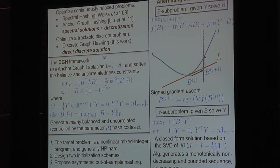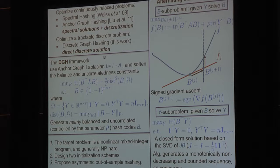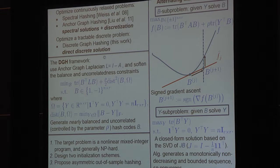Our objective function for the discrete graph hashing framework minimizes the graph Laplacian term, plus we penalize the distance from the binary code B to omega. This omega integrates the balanced and uncorrelated constraints. This problem can be decomposed into two subproblems: the B subproblem and the Y subproblem. In the B subproblem, given Y without B, we have a convex quadratic objective function F(B).